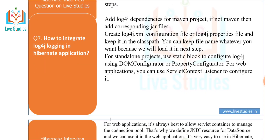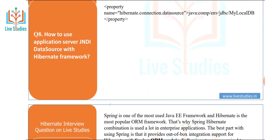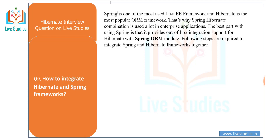Next question: how to use application server JNDI data source with the Hibernate framework? For web applications, it is always best to allow the servlet container to manage the connection pool — that is why we define a JNDI resource for the data source. It is easy to use in Hibernate: remove all database-specific properties and use the property hibernate.connection.datasource to provide the JNDI data source name.